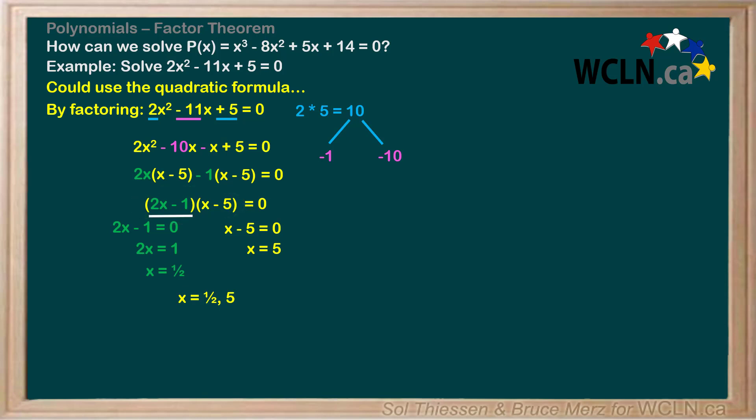Look at the factor 2x - 1, which has the form bx - a. Its corresponding root is a/b, or 1/2. Now look at the factor x - 5, which has the form x - a, corresponding to a root of a, or 5.